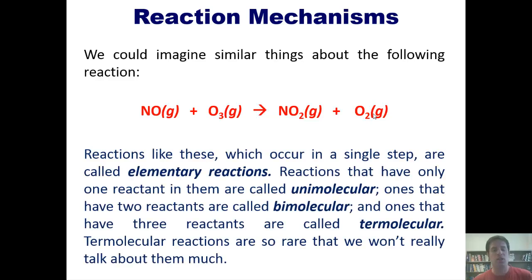Reactions like these, which occur in a single step, are called elementary reactions. Reactions that have only one reactant in them are called unimolecular. Ones that have two reactants in them are called bimolecular. And ones that have three reactants in them are called termolecular. I have no idea why they didn't call them trimolecular, because that seems like it'd be simpler. But whatever.